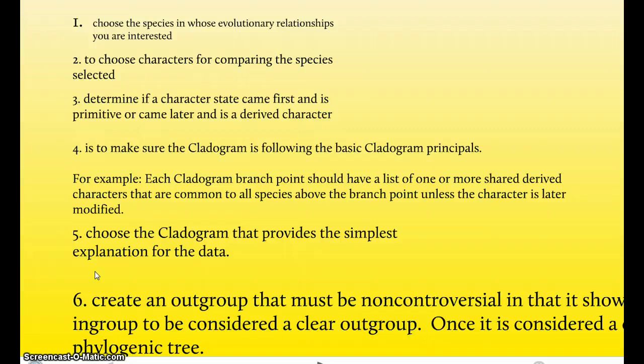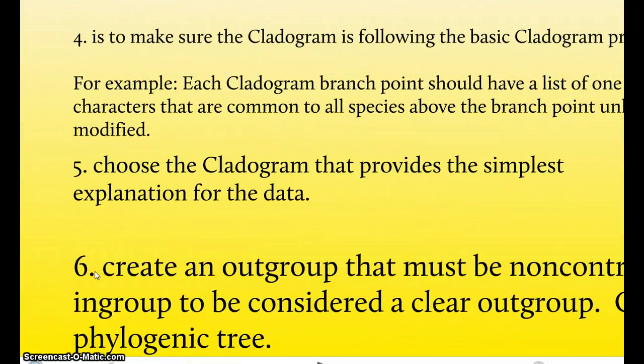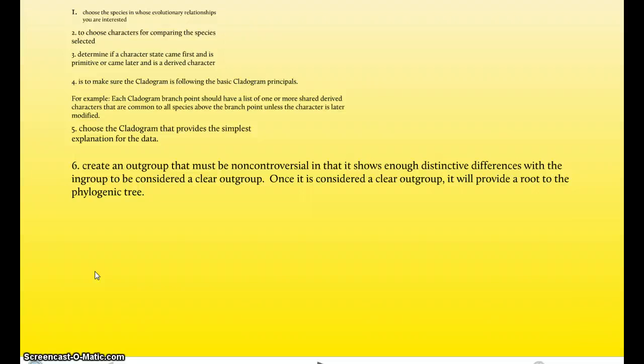Step five is to choose the cladogram that provides the simplest explanation for the data. And this is pretty straightforward. If you're going to create a cladogram, you want to make sure it's not bizarre. You want to make sure that it's simple and to the point. And step six is to create an outgroup that must be non-controversial in that it shows enough distinctive differences with the ingroup to be considered a clear outgroup. Once this is considered a clear outgroup, it will provide a root to the phylogenic tree.